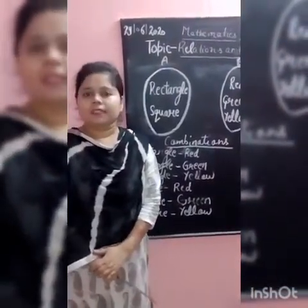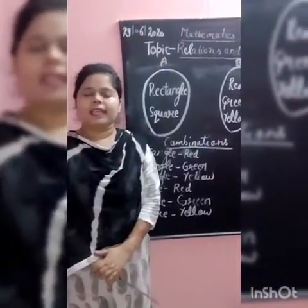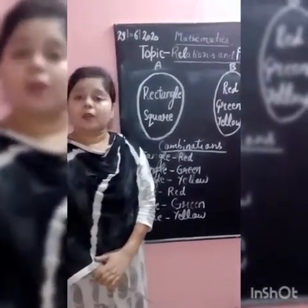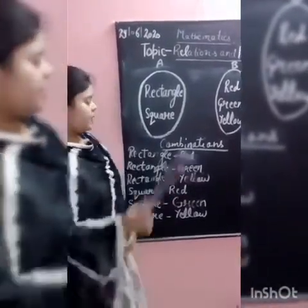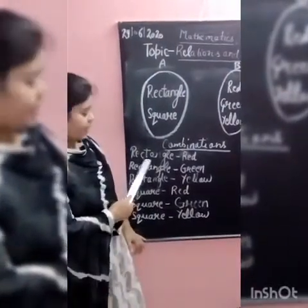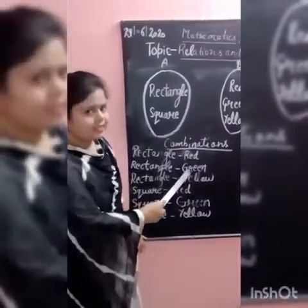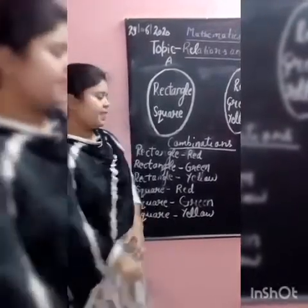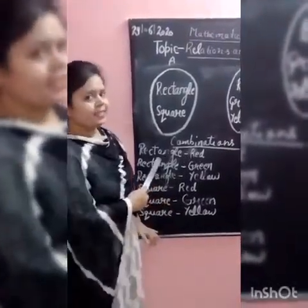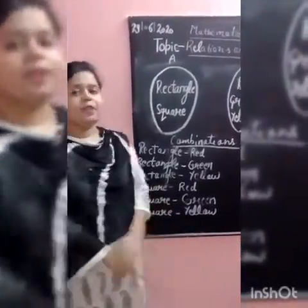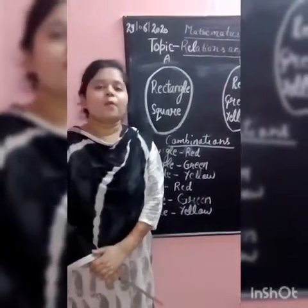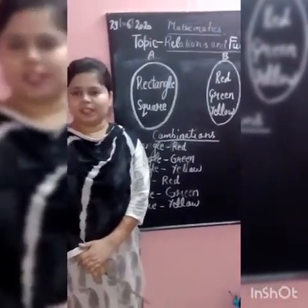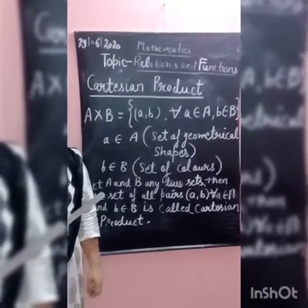Ordered pair is critical. Why is it critical? Because we have written rectangle with red — we cannot write red with rectangle. We will know more about this in the next video.